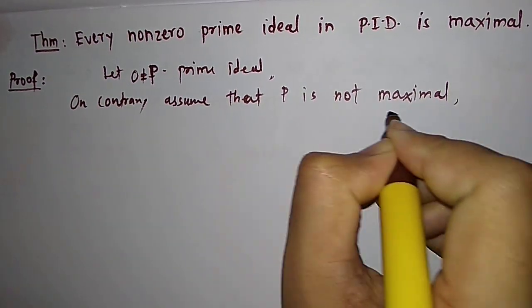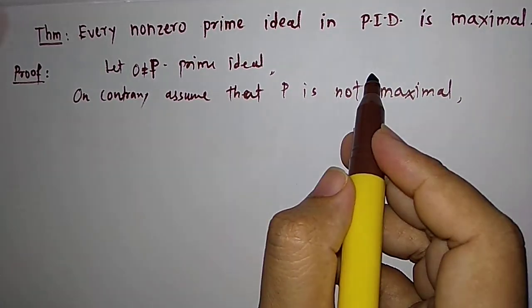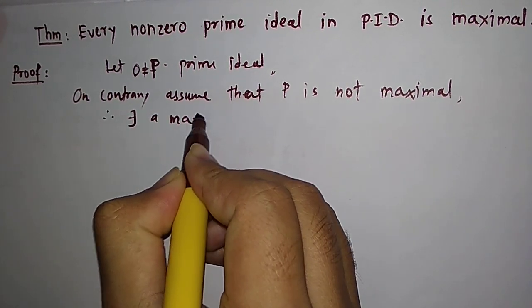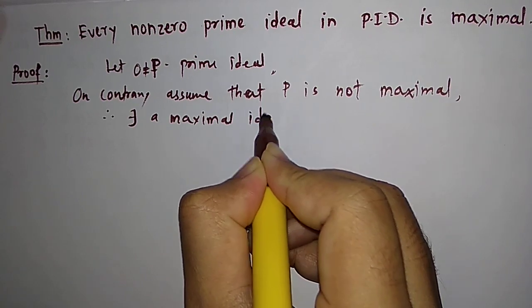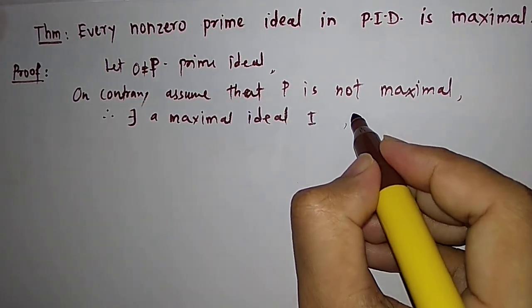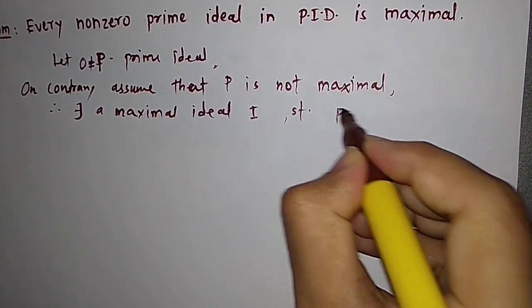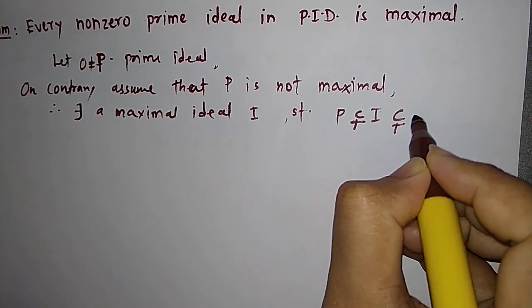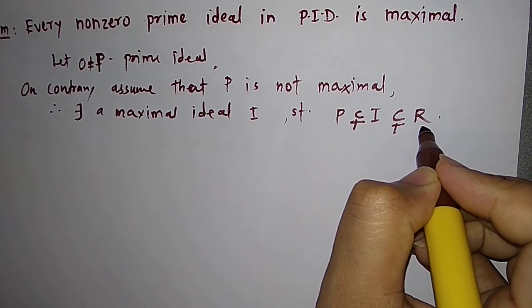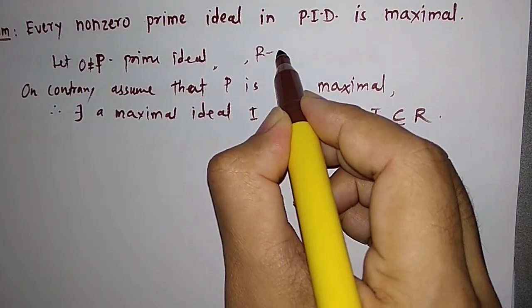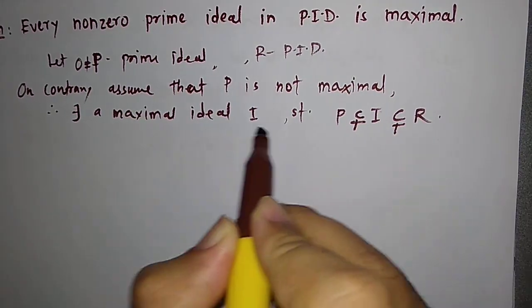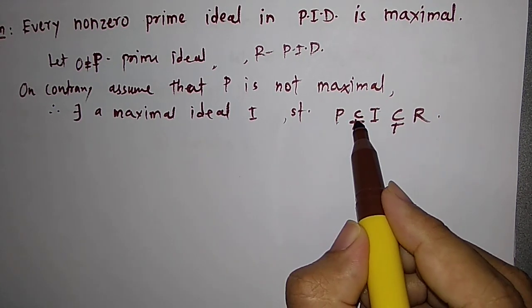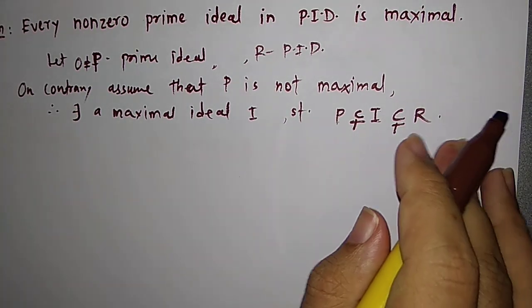If P is not maximal, then there must exist a maximal ideal I which contains P such that P is strictly inside I, and this I is also not equal to the whole ring R, which is our PID. So there exists this maximal ideal which properly contains P and is properly contained inside the PID R.